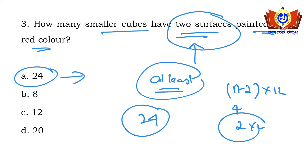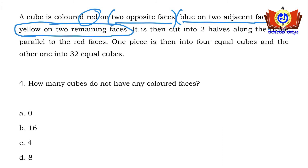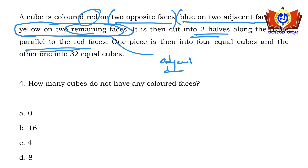Moving on: a cube is colored red on two opposite faces, blue on two adjacent faces, and yellow on two remaining faces — all six faces are colored. It is then cut into two halves along the plane parallel to the red faces. One piece is then cut into four equal cubes and the other into 32 equal cubes.